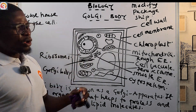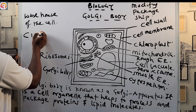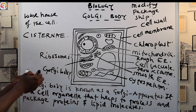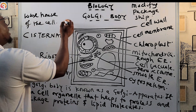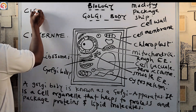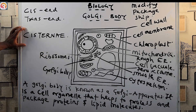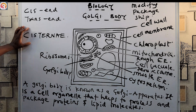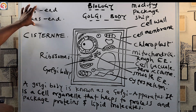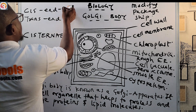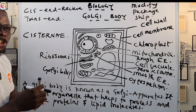The Golgi body consists of a bunch of walls called the cisternae. The cisternae have two ends: the cis end and the trans end. The cis end receives molecules to be packaged, while the trans end ships those molecules out.